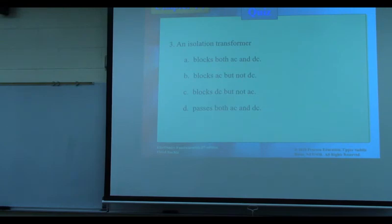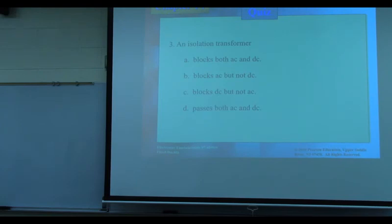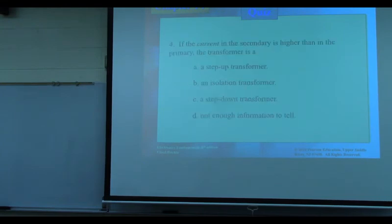An isolation transformer blocks DC and passes AC. It is not correct that it blocks both AC and DC. DC is blocked because magnetic flux does not change with DC — Faraday's law requires changing flux to induce voltage. AC can be coupled through. The answer is C.